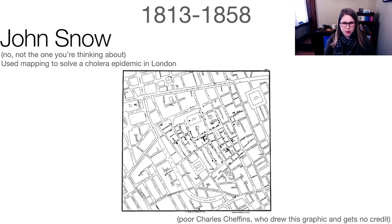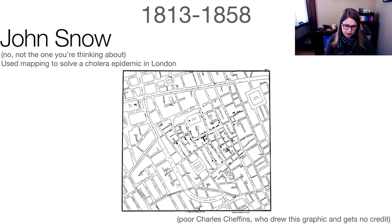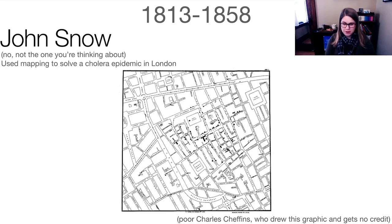Next up is Jon Snow — probably not the one you're thinking of from Game of Thrones. Jon Snow is famous because he used mapping to solve the cholera epidemic in London. This was some early epidemiology, where he was able to determine that there was a particular pump that was infected, removed the handle from the pump, and then was able to control the cholera epidemic. Jon Snow gets credit for this map, which is a famous piece of early data visualization, but it was actually drawn by someone named Charles Cheffins, who doesn't usually get credit for it.